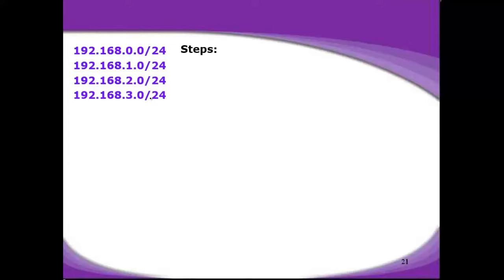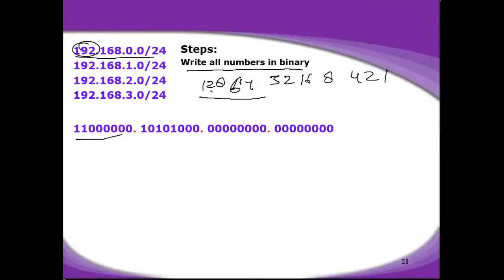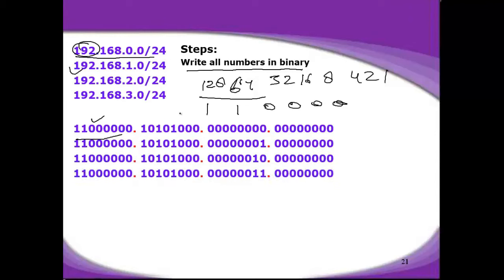The steps required to do supernetting: the first step is to write all the numbers in binary. I need to write all these numbers in binary using the table: 128, 64, 32, 16, 8, 4, 2, 1. To write binary for 192, I add 128 plus 64, which makes 192 — so I put 1 for those positions and 0s for the remaining. This is how I get the binary number. I need to write the binary for all four numbers, and I have now written down all the binaries for all four numbers.